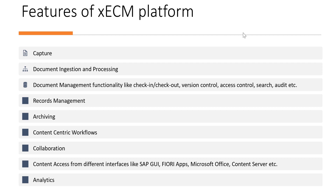Records management is also available, and we briefly touched on that. Then archiving — we can archive content for long-term storage. The platform also provides content-centric workflows to automate document-centric business processes. For example, processes that are not managed in SAP but are document-centric, such as a review and approval workflow for a document coming from SAP, can be created directly in the xECM platform where users can review and approve as part of that workflow. Collaboration features allow content to be shared easily, with add-ons like Core Share enabling sharing even outside the enterprise.